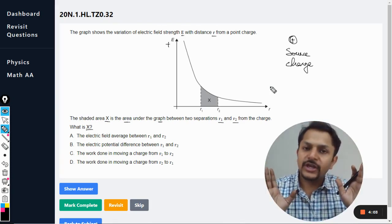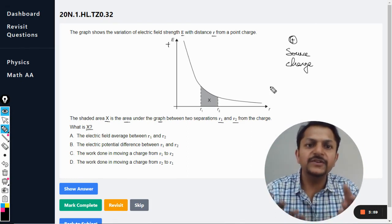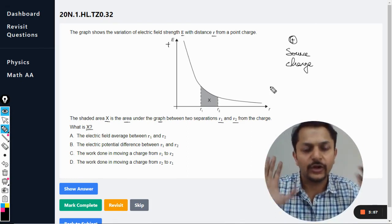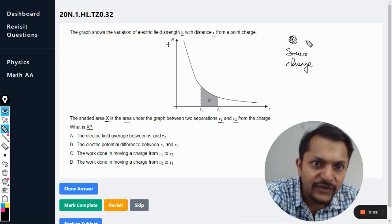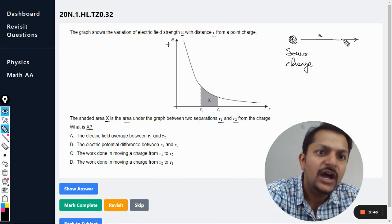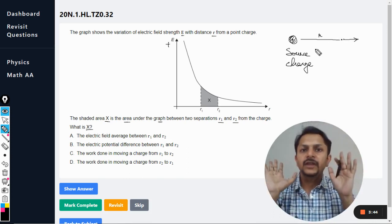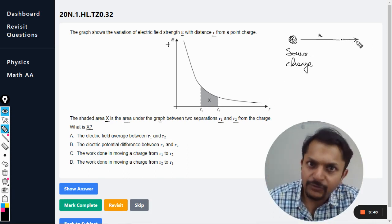The graph shows positive electric field strength, so we are talking about a positive source charge. This positive source charge has created an electric field around it which is positive. At any point r distance away, the electric field is pointing away from the charge.